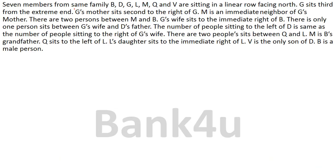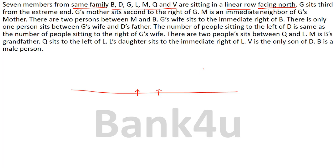Here's the question: 7 members from the same family — B, D, G, L, M, Q, and V — are sitting in a linear row, and all of them are facing towards the north direction. We know if somebody is facing north, their left is to the left and their right is to the right. We have to assume the information given is not necessarily in the same order, but we also have to find out the relationships.